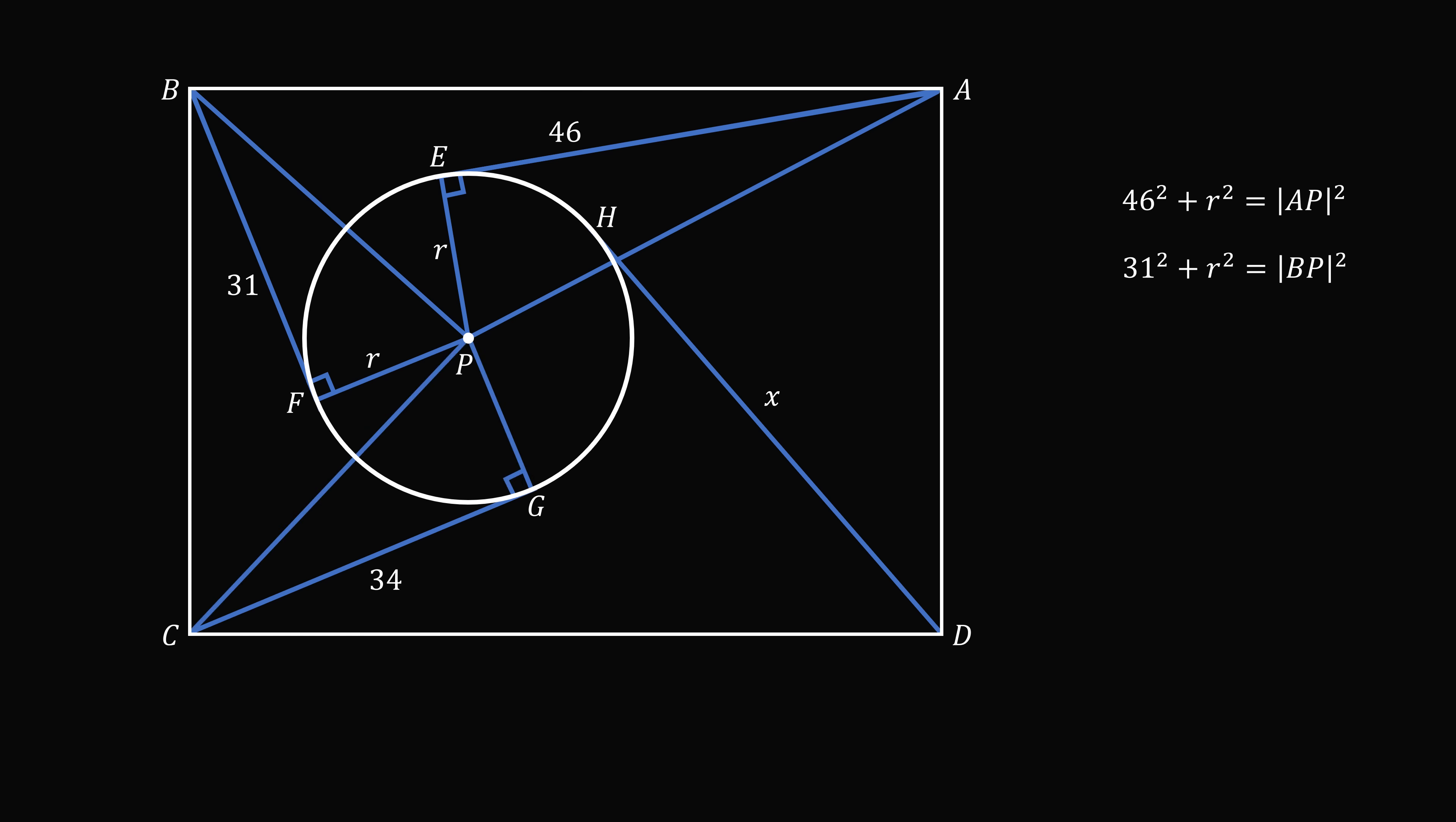Now construct the right triangle CGP. GP is equal to R, so we have 34 squared plus R squared is equal to CP squared.